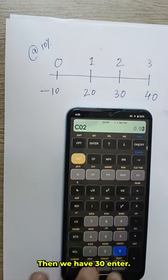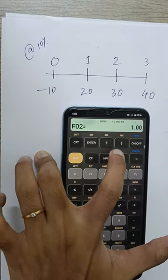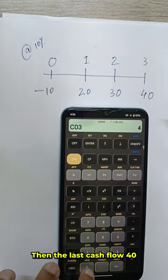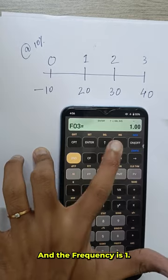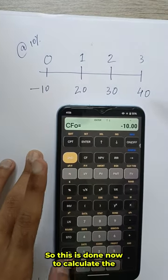Then we have 30 enter again the frequency is 1. Then the last cash flow 40 enter and the frequency is 1. So this is done.